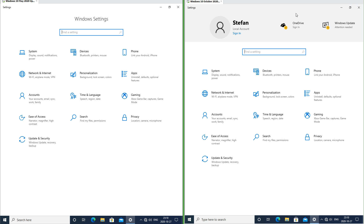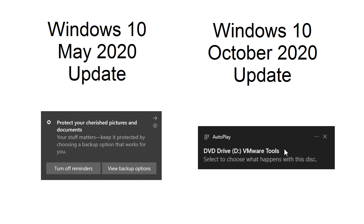In Windows 10 October 2020 update, in the settings app there is now a bar at the top. In Windows 10 May 2020 update the notification toasts have an arrow and a settings icon in the top right. In Windows 10 October 2020 update they have an X and three dots in the top right.